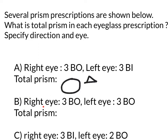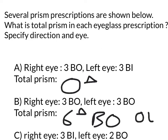For part B, the right eye has 3 base out and the left eye has 3 base out. Do you add them or do you subtract them? In this case, you add them. You get 6 prism diopters base out, because you have to specify the direction and the eye — so this is 6 prism diopters base out in both eyes. You can draw it out or just imagine it in your head. You can see that the prisms are pointing in opposite directions, so you add them.